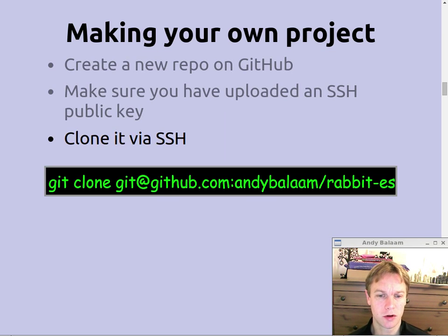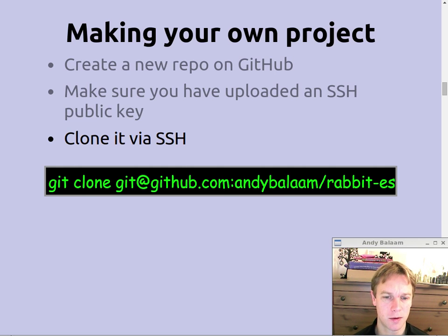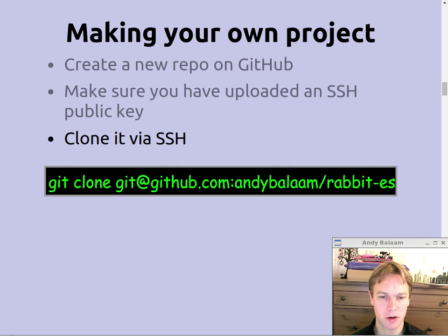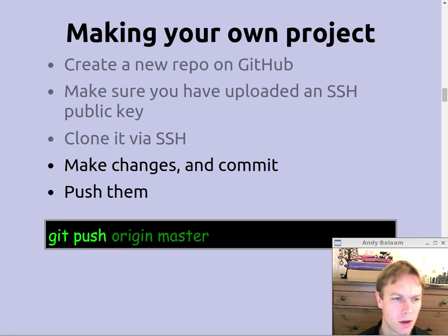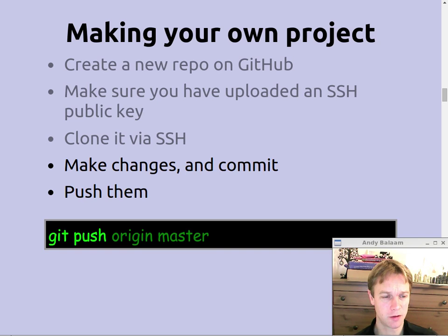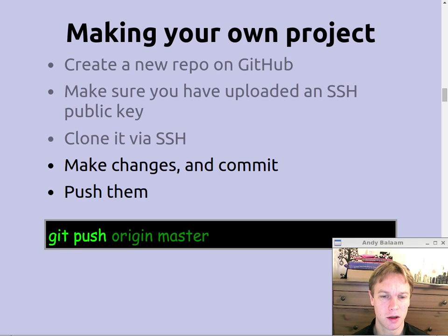Once you've made your own project and made sure you've got an SSH key uploaded, you can clone your project which means pull it down onto your machine. Go to that clone URL section on the middle right of the page, but this time click on SSH — when you're going to be pushing back you need the SSH URL. Using the SSH URL will use that public key you've just uploaded to confirm who you are when you do a git push.